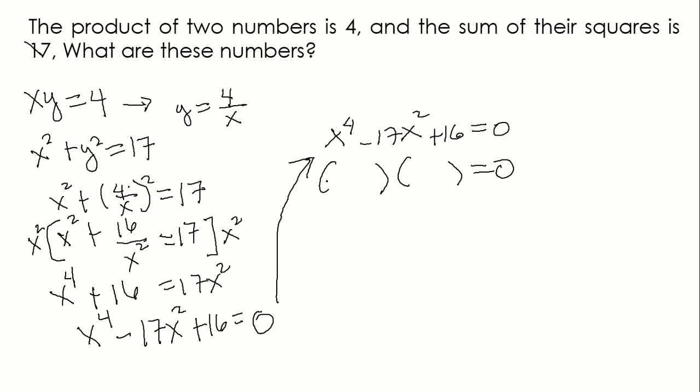Factoring, x to the 4th, so x squared. What factors of 16 when added give us negative 17? Not 4 and 4, not 8 and 2. So 16 and 1. Since negative and positive, both factors are negative. So we have x squared minus 16 and x squared minus 1 equals 0.